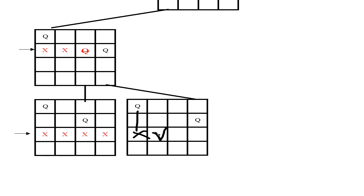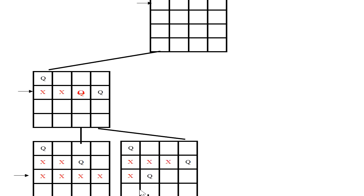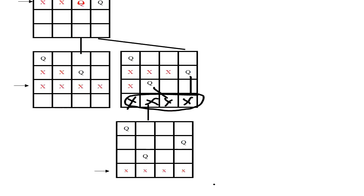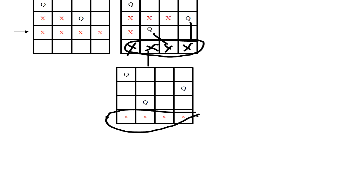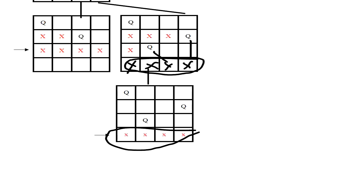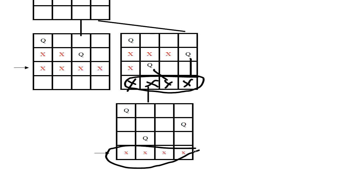With the third queen placed, we check the fourth row. No position works: the first queen attacks one spot, the third queen attacks vertically in another, and the remaining positions are also blocked. All positions in the fourth row hit a dead end. Only three queens were placed successfully; the fourth could not be placed. So we backtrack again and try a different position for the third queen — but that row is also blocked. We backtrack further to the second row, and then to the first row.